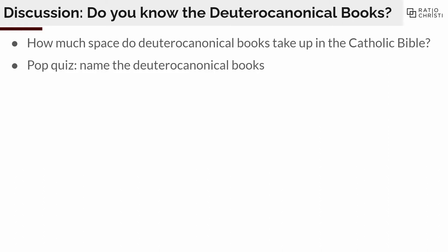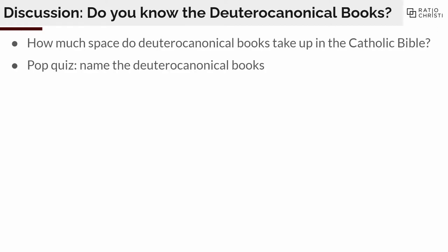Pop quiz — see if we're, or even one person can do it. This will be hard for both Catholics and Protestants, because Catholics generally don't know what they have that Protestants don't, and Protestants don't know what Catholics have that they don't have. So who can name all of the books? First and Second Maccabees, Tobit, Judith, Sirach, Baruch, Wisdom — correct! And the other names for Sirach: Wisdom of Ben Sirach, and also Ecclesiasticus. Boom, you got it.